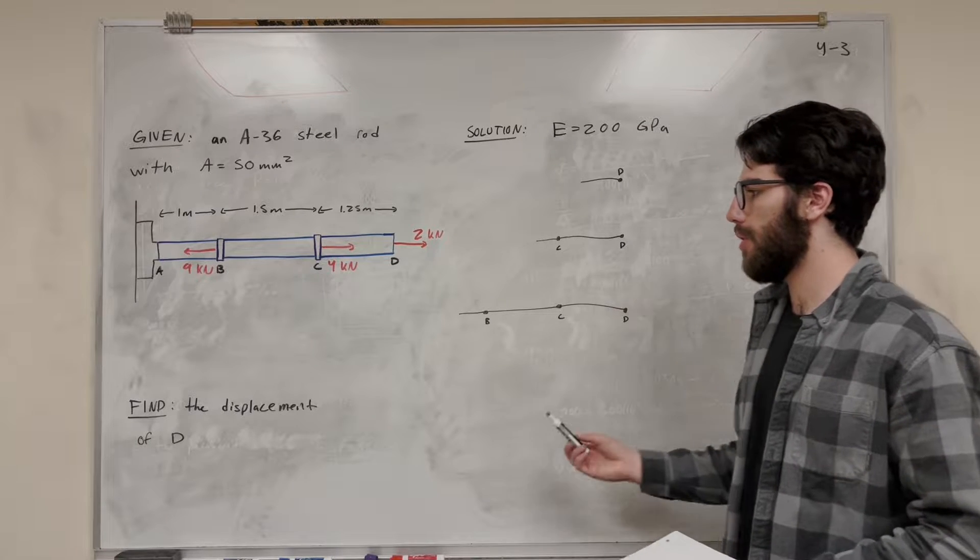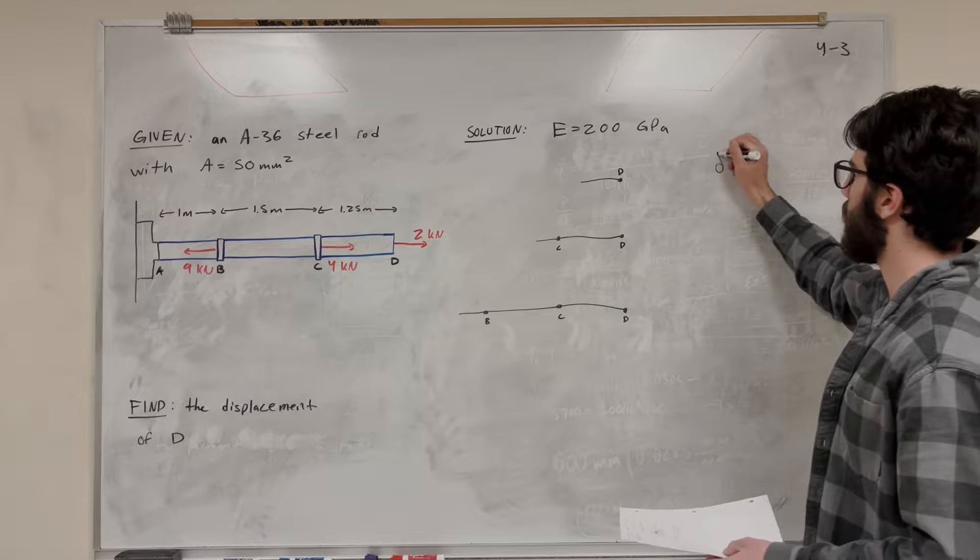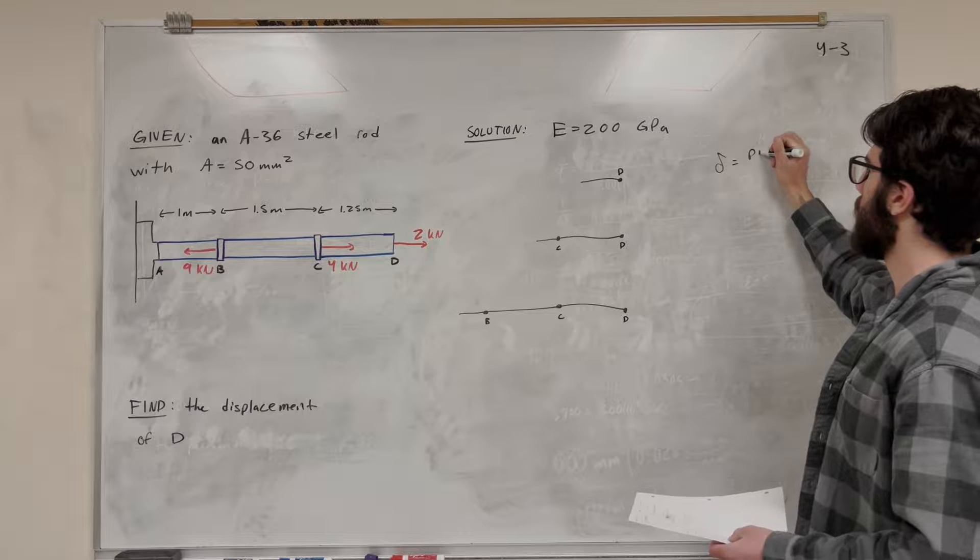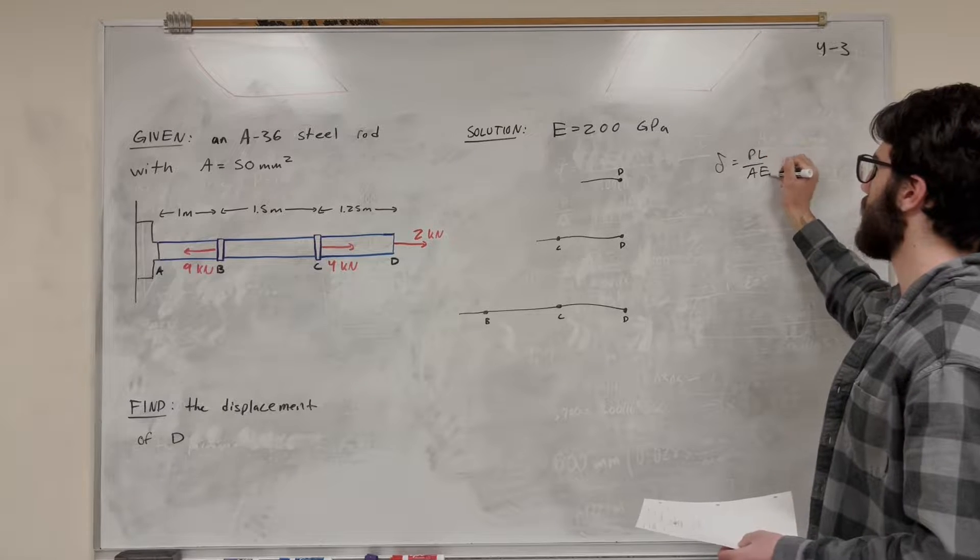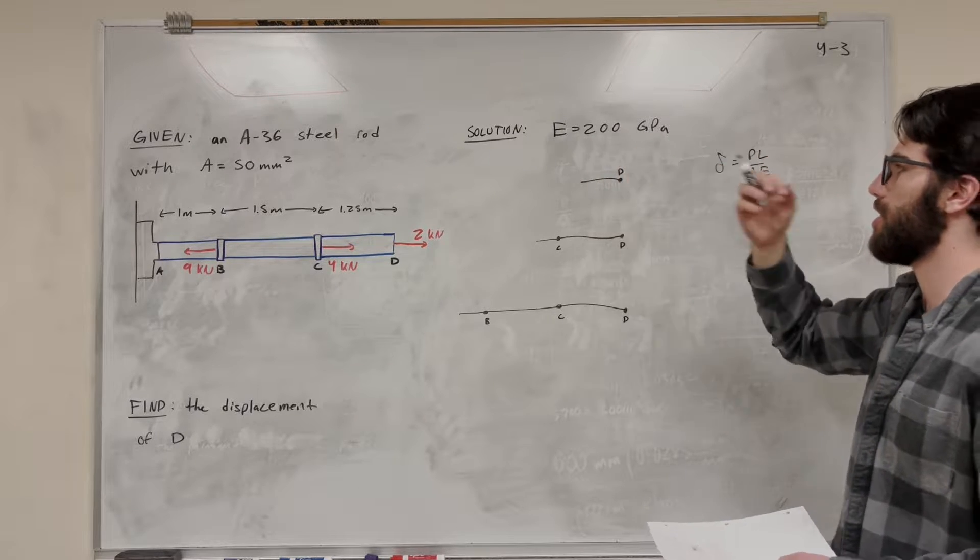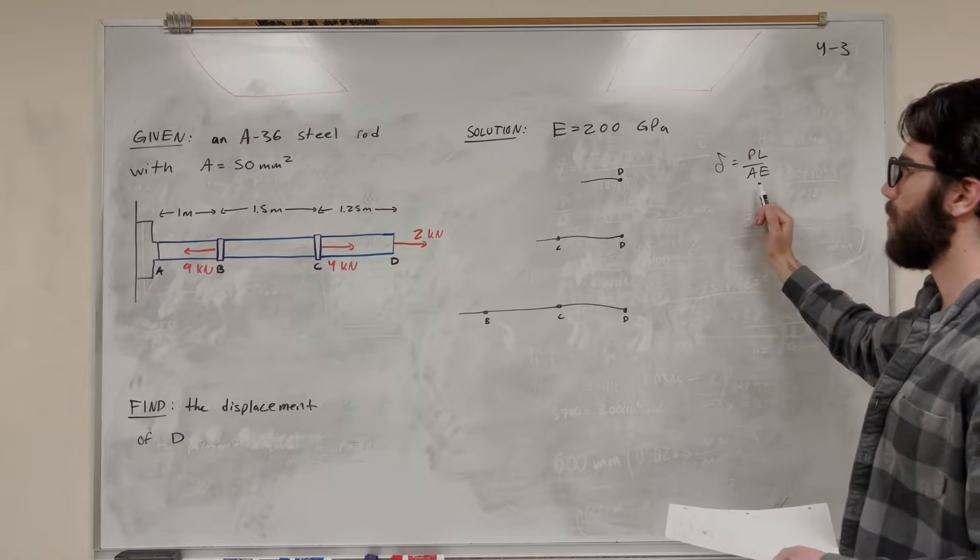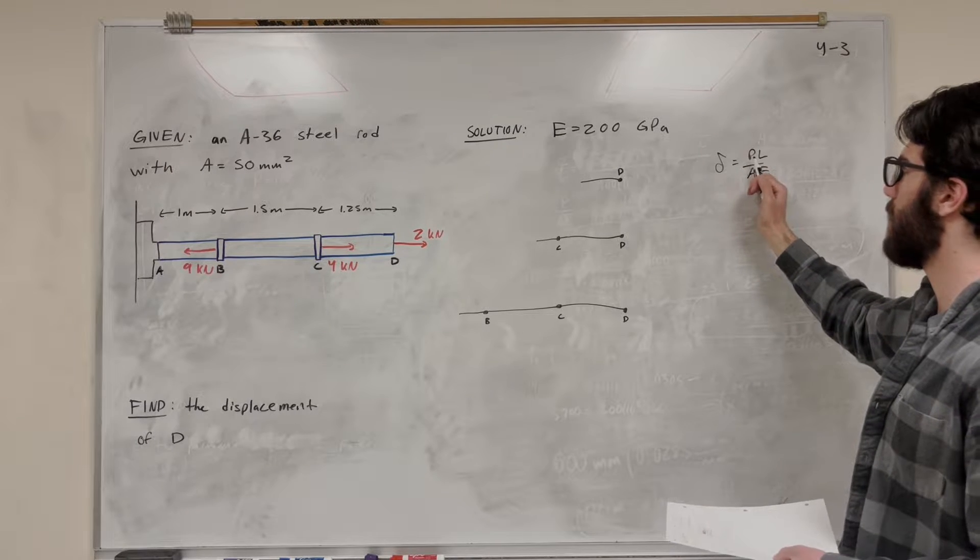So let's go ahead and get started. The equation we're going to use, the displacement formula, is force times length over area times modulus of elasticity. We know for A36 steel, it's 200 GPa. So we know area too. So we just need to find the force and the length.